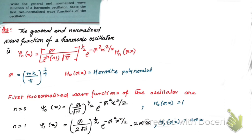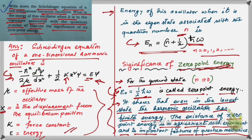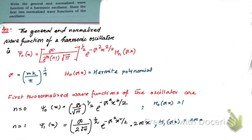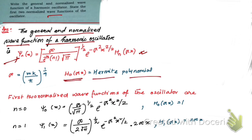Now let's go to the next part of question number seven. Here you can see the general normalized wave function for the harmonic oscillator is given by ψ_n(x), where H_n(αx) represents the Hermite polynomial and α = (mk/ℏ²)^(1/4), where k is the force constant.